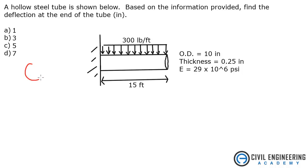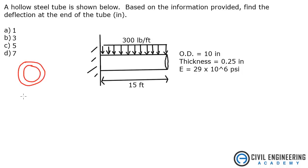Let's go ahead and draw this out. Here's our tube. Let's redo that — here is our tube. The diameter here is 10 inches. That means the radius we will call R2, and the inner radius we will call R1. R2 is equal to 5 inches, and R1 is equal to 4.75 inches because the thickness is 0.25. We're going to need this later in the problem.